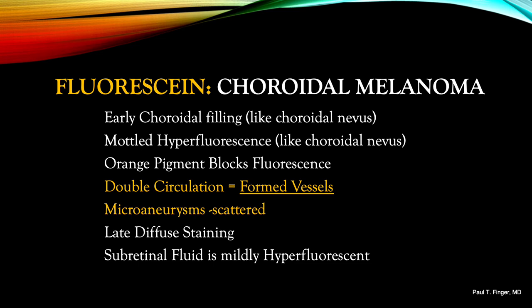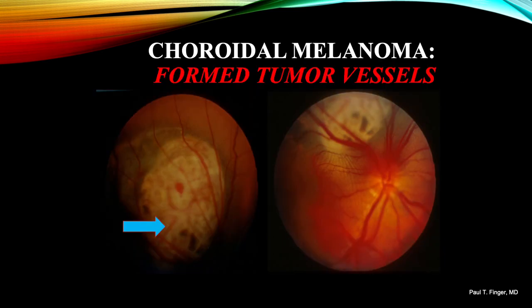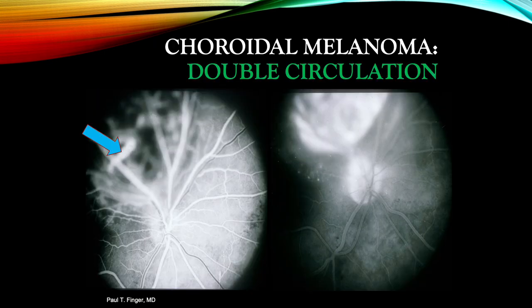Subretinal fluid is typically hyperfluorescent, as seen in the upcoming slides. Note that one of the formed blood vessels is depicted by the blue arrow. This tumor has broken through Bruch's membrane to reveal its vasculature. Formed tumor blood vessels should not be seen in a choroidal nevus, and interestingly, neither in a metastatic choroidal lung or breast cancer. During the early phase angiogram, that same blood vessel is seen to cross beneath the overlying retinal blood vessel — demonstrating the classic double circulation. As seen in the late phase angiogram, diffuse intratumoral fluorescence hides that finding, emphasizing the need to photograph the early phases of the study.